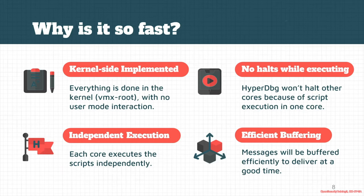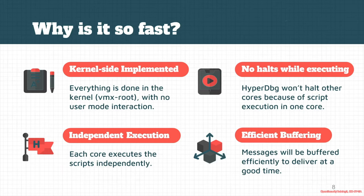Each core executes scripts independently. It doesn't matter if two cores — or even eight — are simultaneously executing a script, because they are independent. You can execute scripts on all cores simultaneously. There's also an efficient buffering method in the script engine that accumulates messages and then sends them to user mode, or sends them immediately to the debugger. When you use a function like printf, you use this efficient buffering.